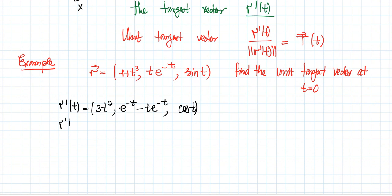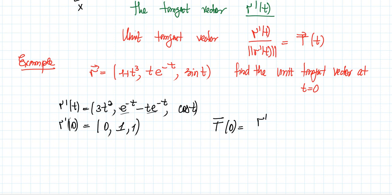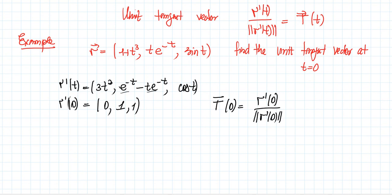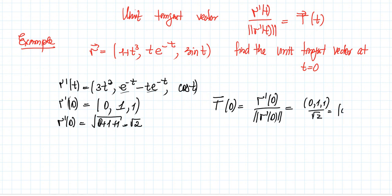We need to find R prime of 0 to get the unit tangent vector at the point t equals 0. This gives us: 0 (since 3 times 0 squared is 0), 1 minus 0 which is 1 (from the e to the negative t terms), and 1 (cosine of 0). So the norm of R prime of 0 is the square root of 0 squared plus 1 squared plus 1 squared, which is the square root of 2. The unit tangent vector is therefore (0, 1, 1) divided by the square root of 2, or (0, 1/√2, 1/√2).